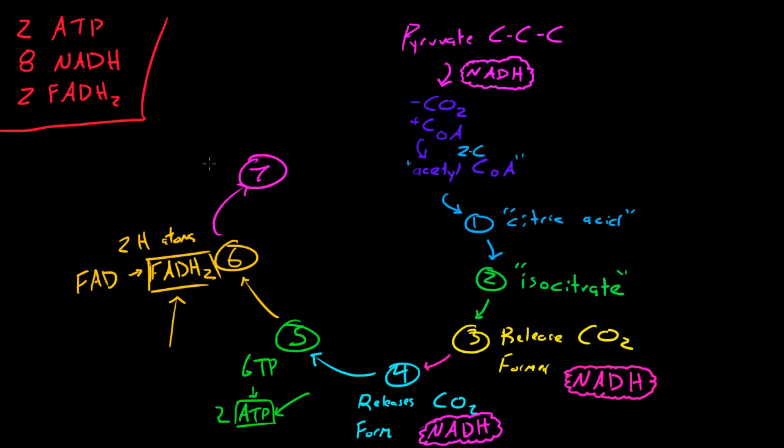Okay, the seventh step was another easy one. A water molecule was added, forming malate, so H2O was added, and now we have malate that formed.